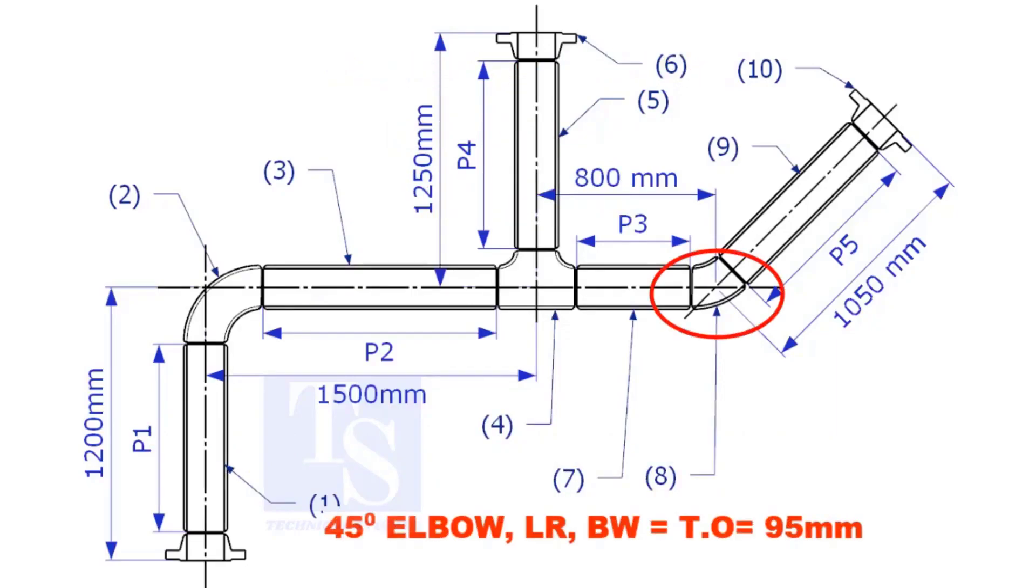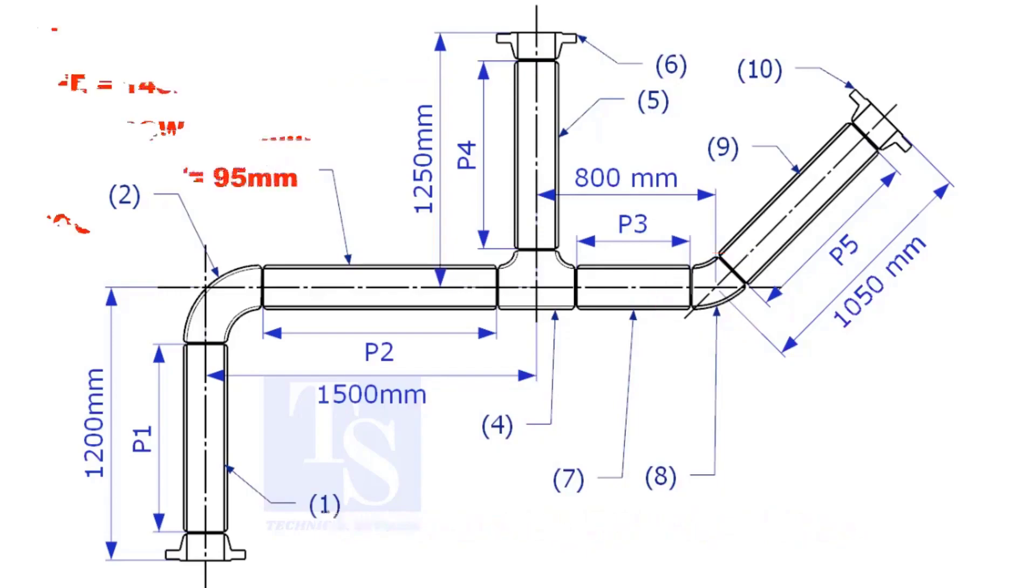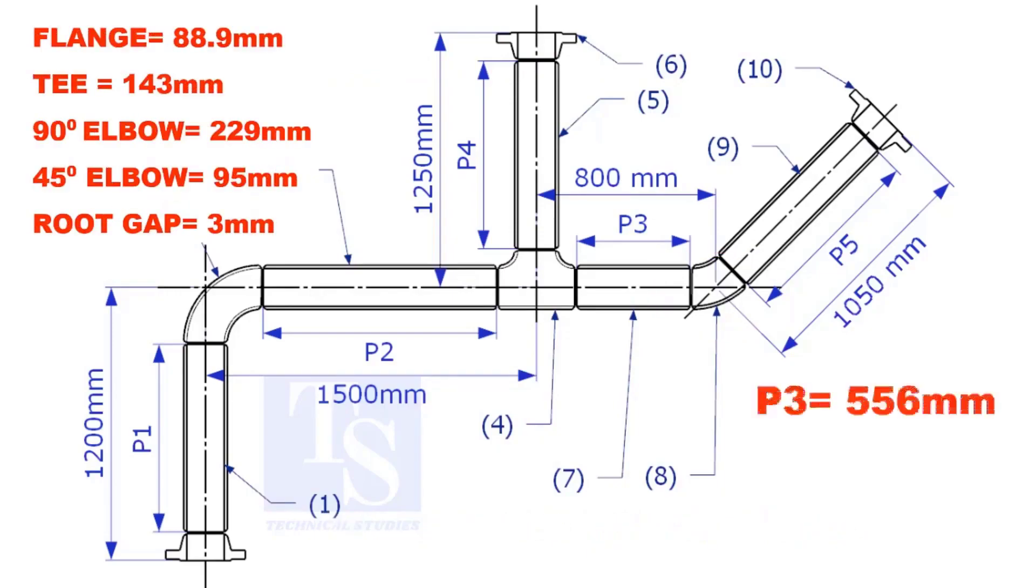Takeoff length of the 45 degree elbow is 95mm. The length of pipe P3, P4, and P5 are given. You can cross check if the answers are correct or not.